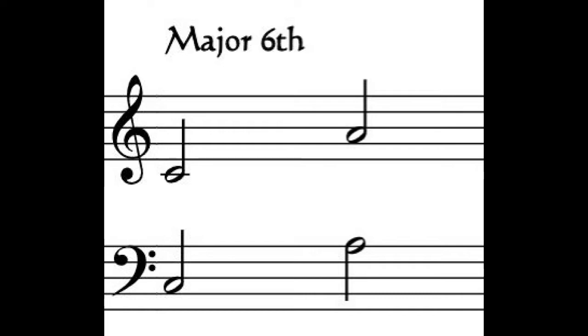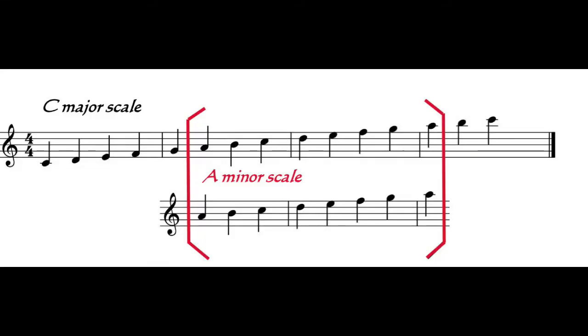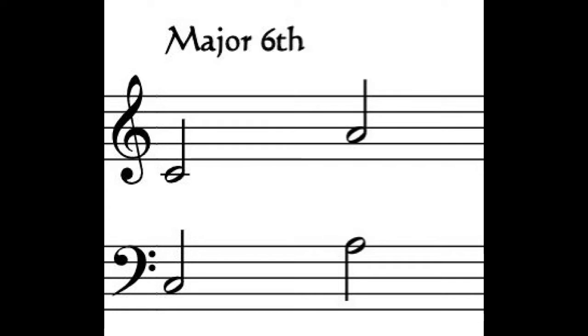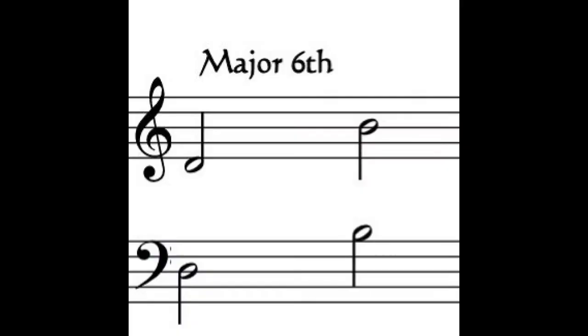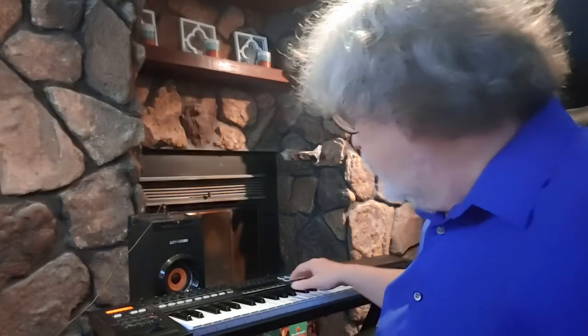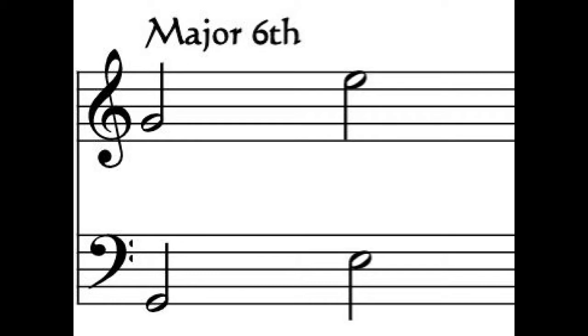The next interval up is a major six. If we're starting on C, it goes up to A. You might remember, when we talked about scales, that A is the relative minor of C — a minor scale is based on the sixth degree of the major scale. The song we use to remember this is My Bonnie Lies Over the Ocean. If we go from D, the sixth is a B above it. From G, it's an E above it.